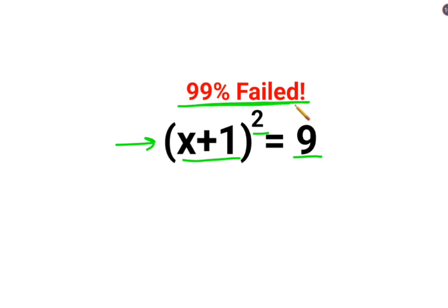And we will realize why this is coming out to be 99% failed. The reason for that is we have (x+1)² = 9.